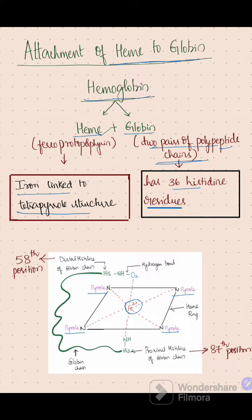Now coming to the attachment of heme to globin, the heme is linked to globin through histidine residues, especially the distal histidine and the proximal histidine.